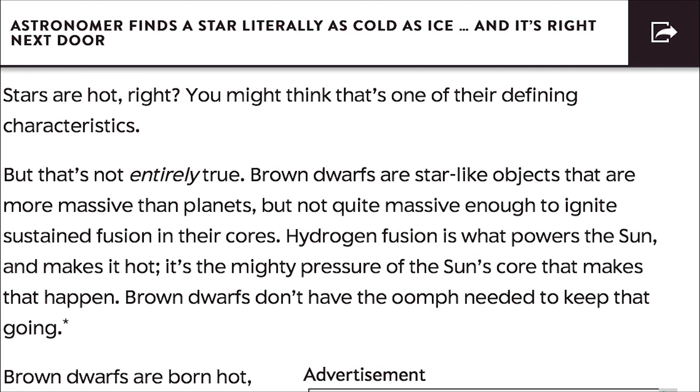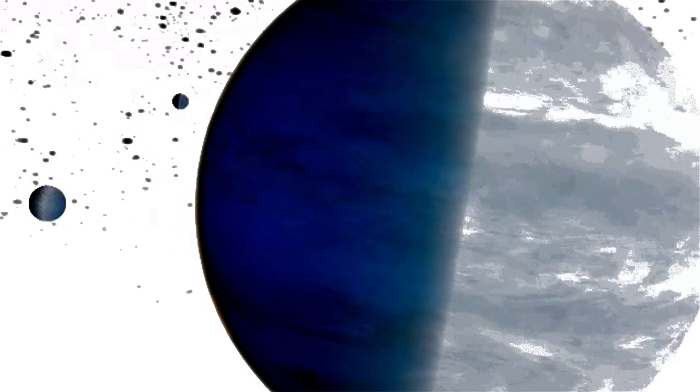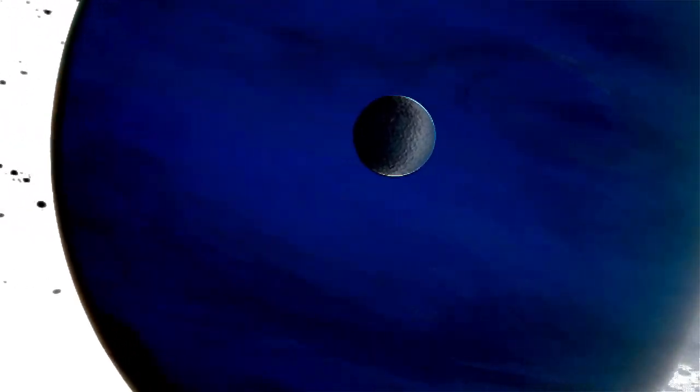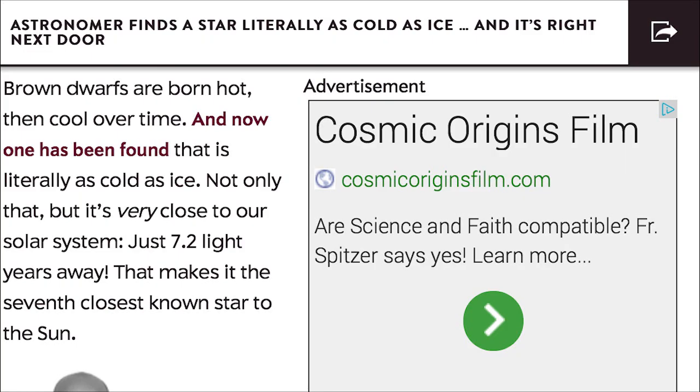It's the mighty mighty pressure of the sun's core that makes that happen. Brown dwarfs don't have the oomph, zero miles per hour, needed to keep that going. Sweet love. Man, brown dwarfs are born hot and then they get cool over time.